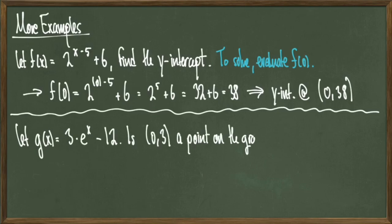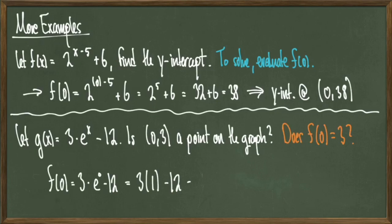Next, let g(x) = 3e^x - 12. We're going to ask, is (3,0) a point on this graph? What this means is, does g(0) equal 3? Well, when we evaluate g(0), we get an answer of -9. So we can conclude that no, the point (0,3) is not a point in this function.